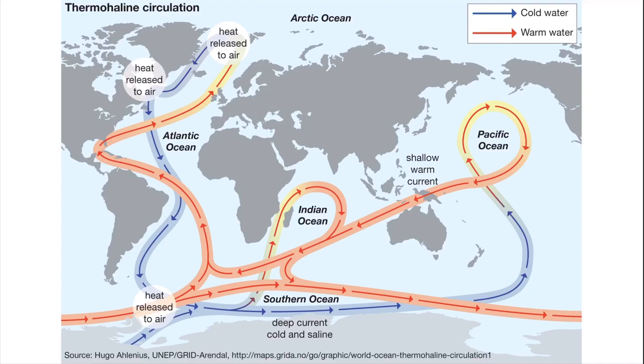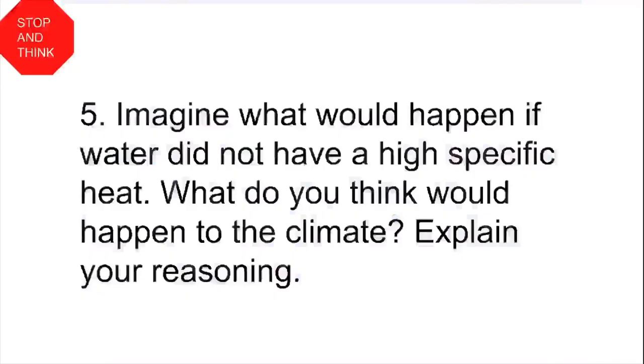But this is a delicate, complicated system, and it depends on this formation of bottom water to drive this process. If the sea ice goes away, then we would expect the thermohaline circulation to change. And climate change may result in the slow or shutdown of this conveyor belt. Take a moment to stop and think and imagine what would happen if water did not have such a high specific heat capacity. How do you think the climate would be affected if this property were different? Please take a few seconds to write down a response and explain your reasoning.